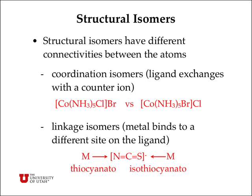Structural isomers have the same molecular formula but different connectivities between atoms. One type is a coordination isomer, where a ligand exchanges with a counter-ion — for example, cobalt chloride becoming cobalt bromide where chloride is now the counter-ion. Another type is a linkage isomer, where the metal can bind to a different site on the ligand. For example, the thiocyanate ligand: binding through the nitrogen end is called thiocyanato, while binding through the sulfur end is called isothiocyanato — the same ligand flipped head to tail.